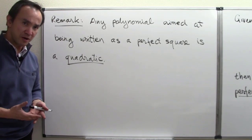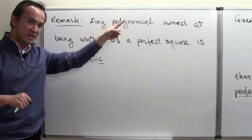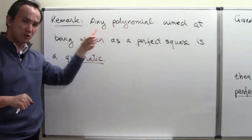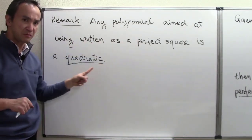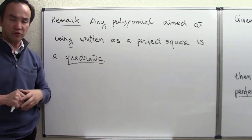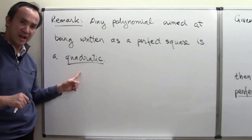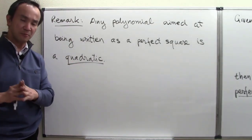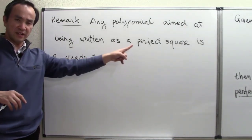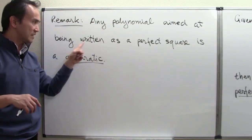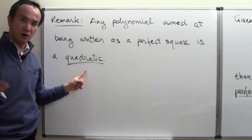Before closing down the lesson, allow me to bring in one last remark. Any polynomial that is aimed at being written as a perfect square must be a quadratic. You may have heard me using this term in some earlier lessons, and we will spend some time learning more formally about a quadratic polynomial. Any polynomial that we aim to write as a perfect square — we call those polynomials quadratics.